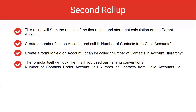The second rollup necessary for this use case is going to be used to sum the results of the first rollup and store that calculation on the parent account. Again, create a number field on account and call it 'Number of Contacts from Child Accounts.' In order for this to sum up multiple levels, you will need to create a formula field that will return a numeric result.